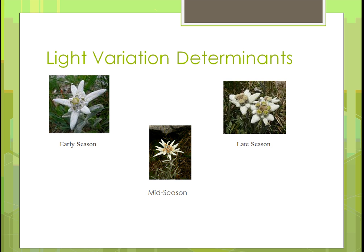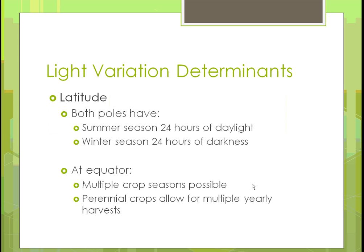Here is an example of light variation through the season. In the left picture early in the season, it's fairly full but not very colorful. In the mid-season picture, the plant is getting a lot of sun and looks healthy. Late in the season, it's starting to decline. For latitude, at the poles both the north and south poles have a summer with 24 hours of daylight and a winter with 24 hours of darkness.